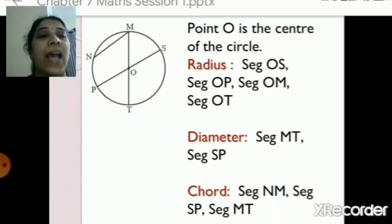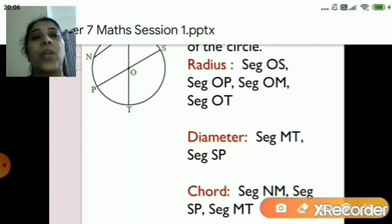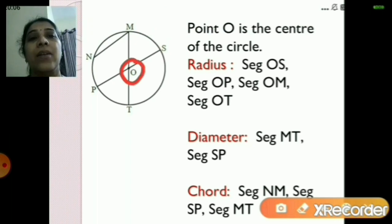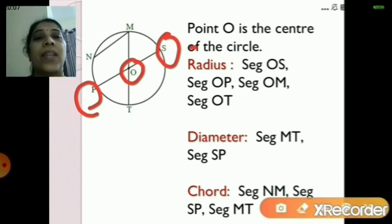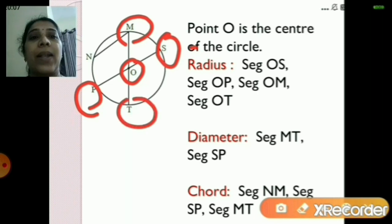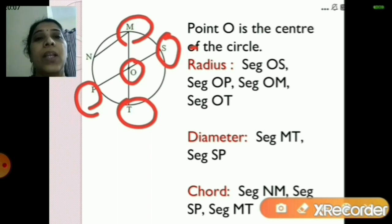Next we will see about the diameter. What was the definition of the diameter? A chord passing through the center of the circle is called a diameter. Center is O, and you can see point P and point S. The chord is passing through the center of the circle, so your diameter will be segment PS or segment SP. There is another chord — segment MT — which is also passing through the center of the circle. So segment MT is also your diameter. So segment PS and segment MT are the diameters of the circle.